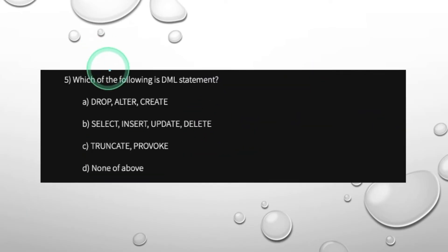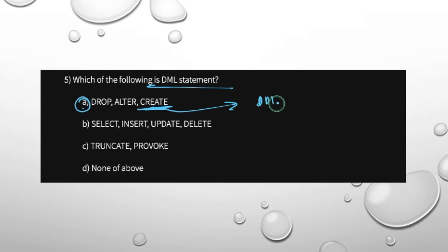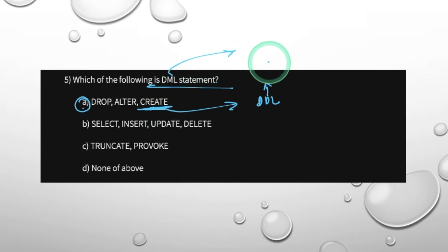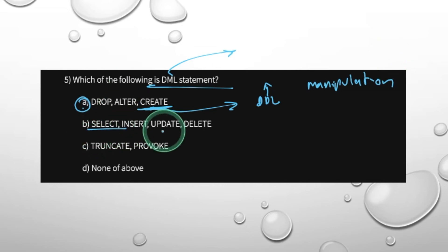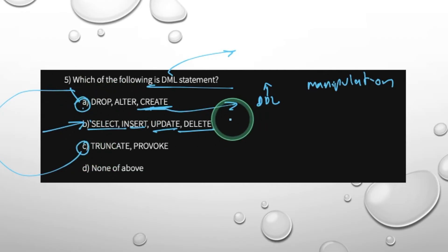Which of the following is a DML statement? DML — Data Manipulation Language — is different from DDL and DCL. DML stands for Data Manipulation Language. This is the DML statement.